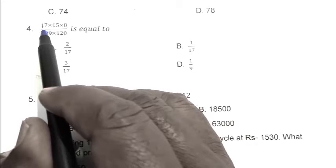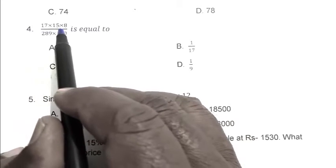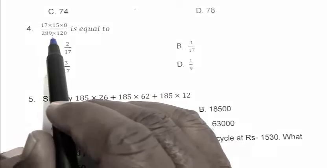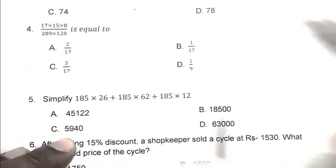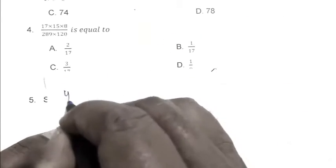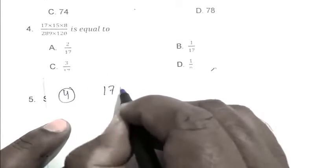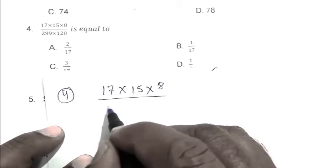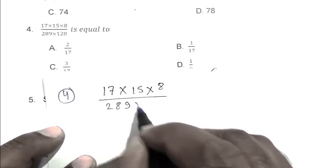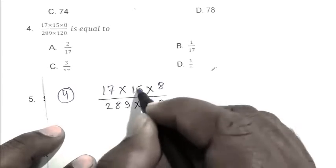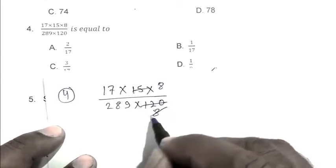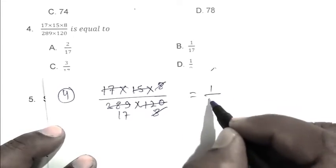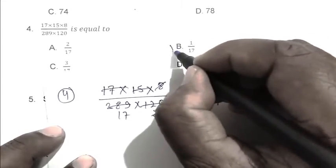Question number 4: 17 × 15 × 8 divided by 289 × 120. Canceling 8 and 17, we get 1/17. So B is the right answer.